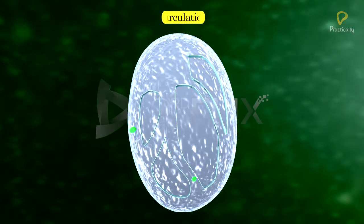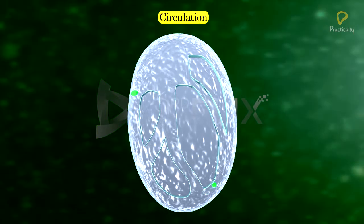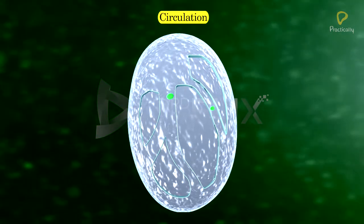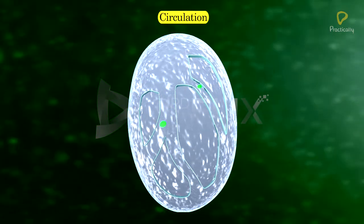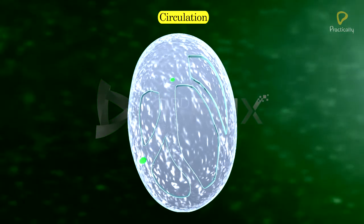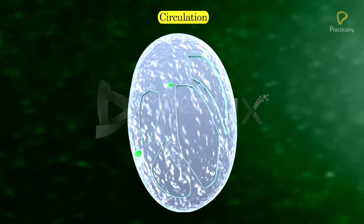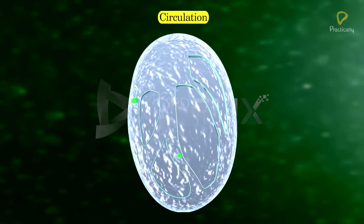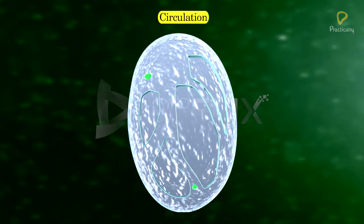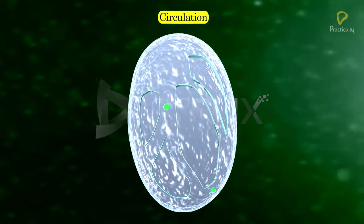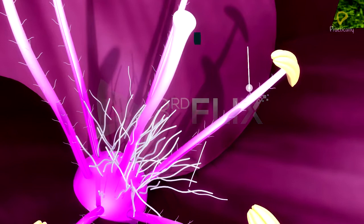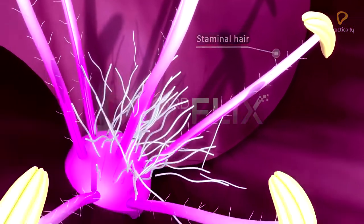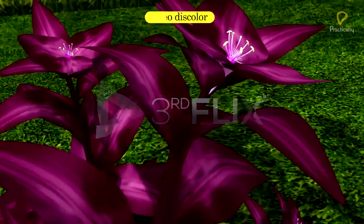Circulation. Multidirectional movement of cytoplasm around the vacuole in a zigzag manner is called circulation — that means in both clockwise and anticlockwise directions. Circulation is seen in the staminal hair cells of Rhoeo discolor.